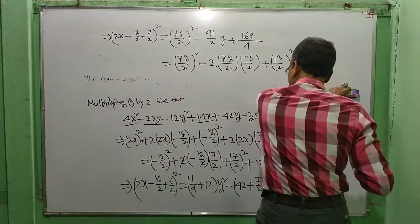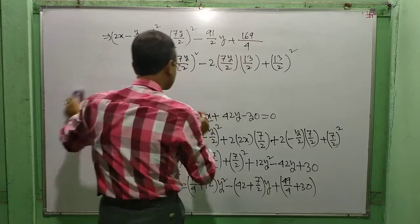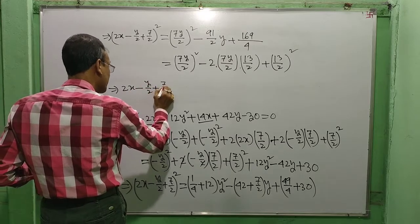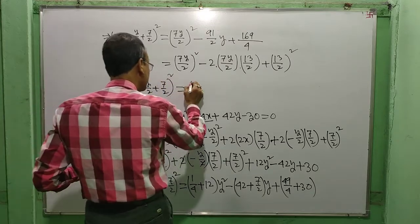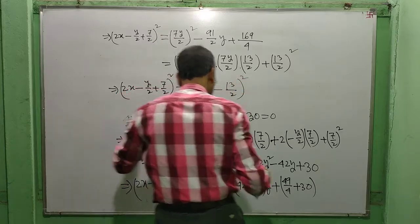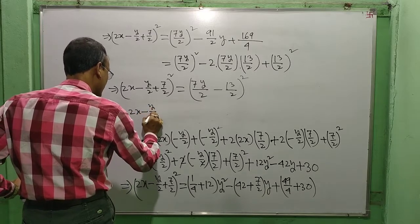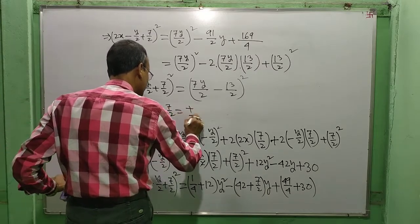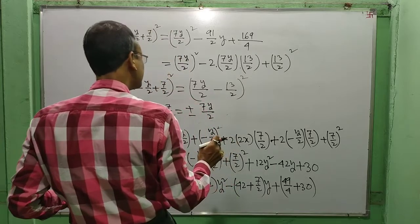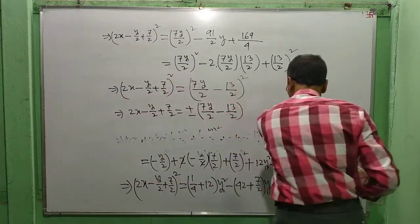You will get this. And this means (2x − y/2 + 7/2)² is equal to (7y/2 − 13/2)². This means 2x − y/2 + 7/2 is equal to plus or minus (7y/2 − 13/2).